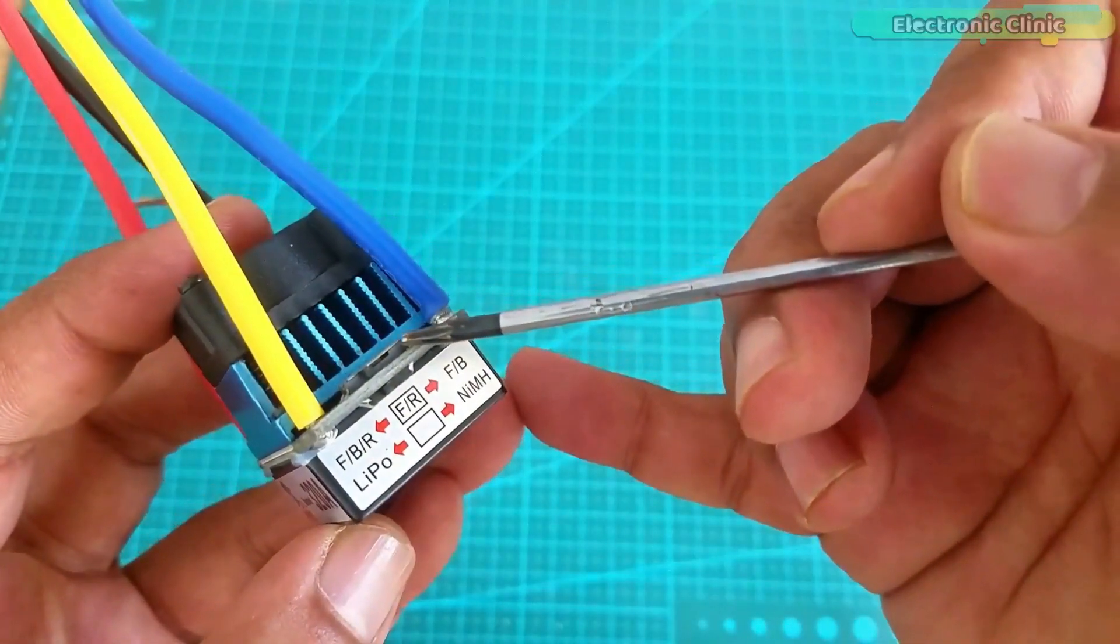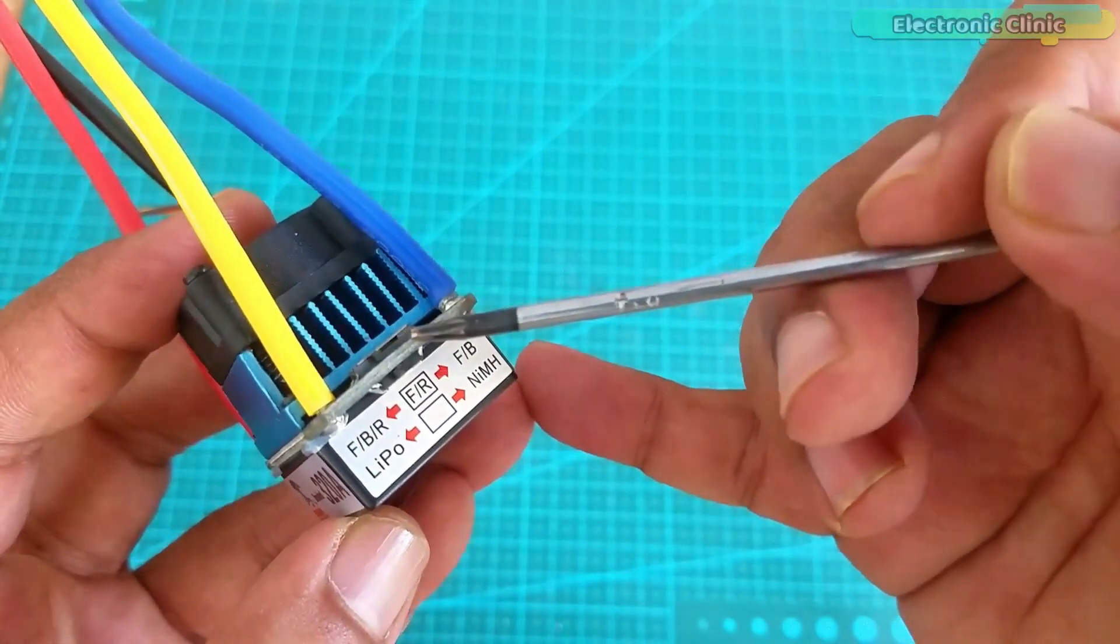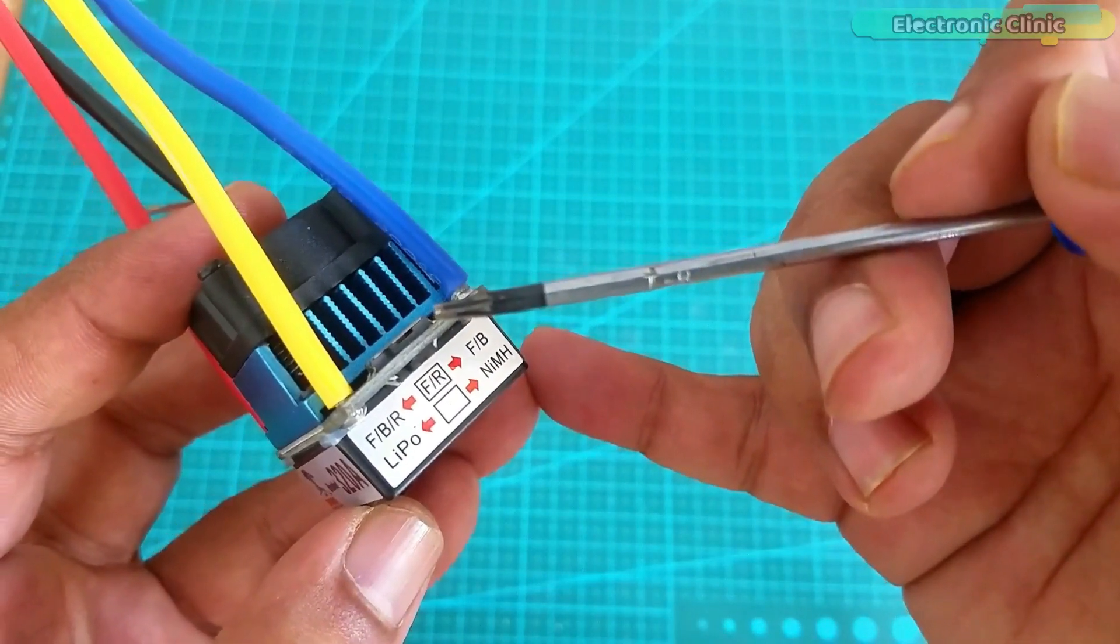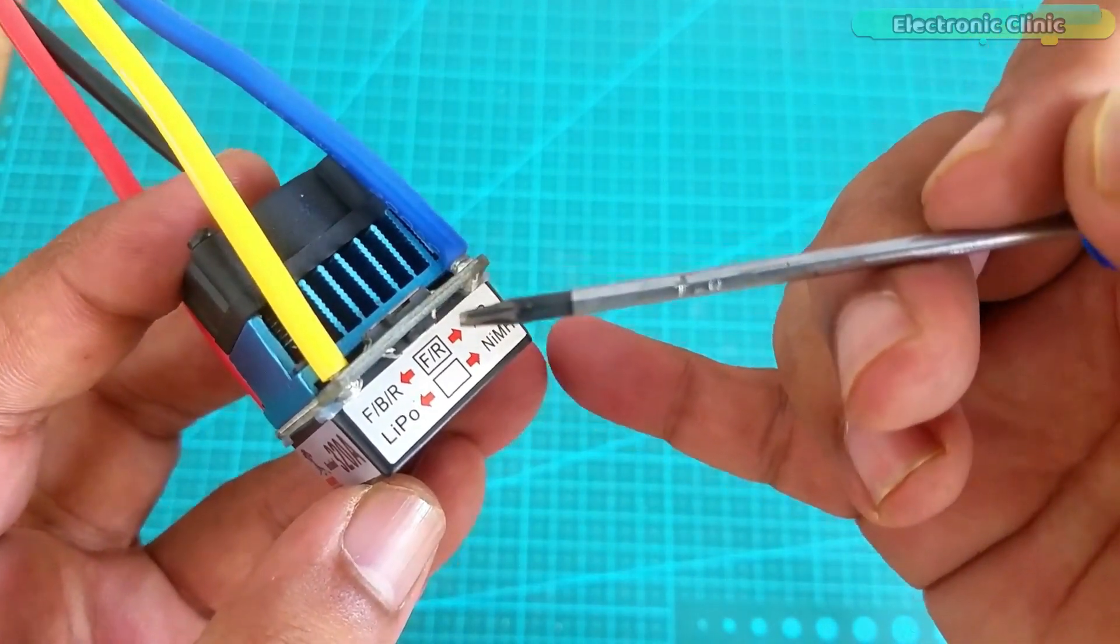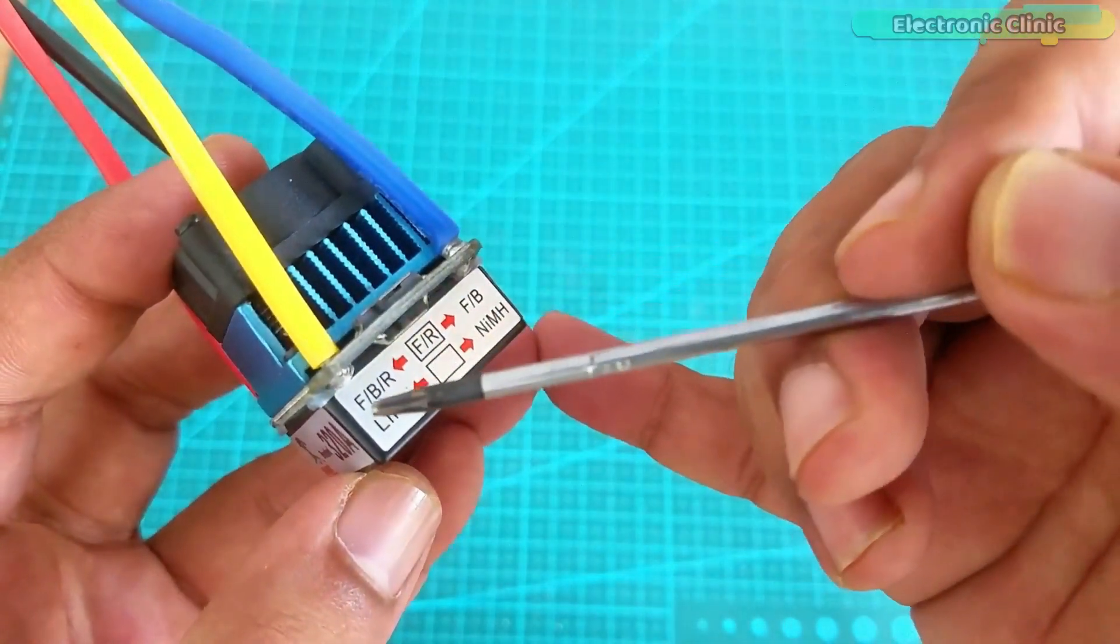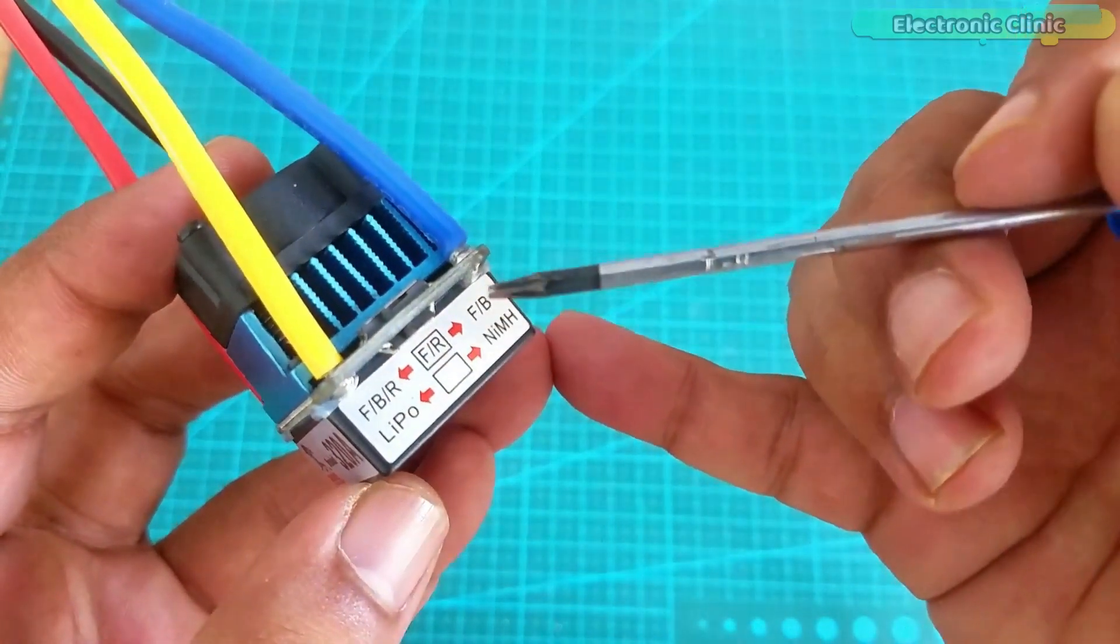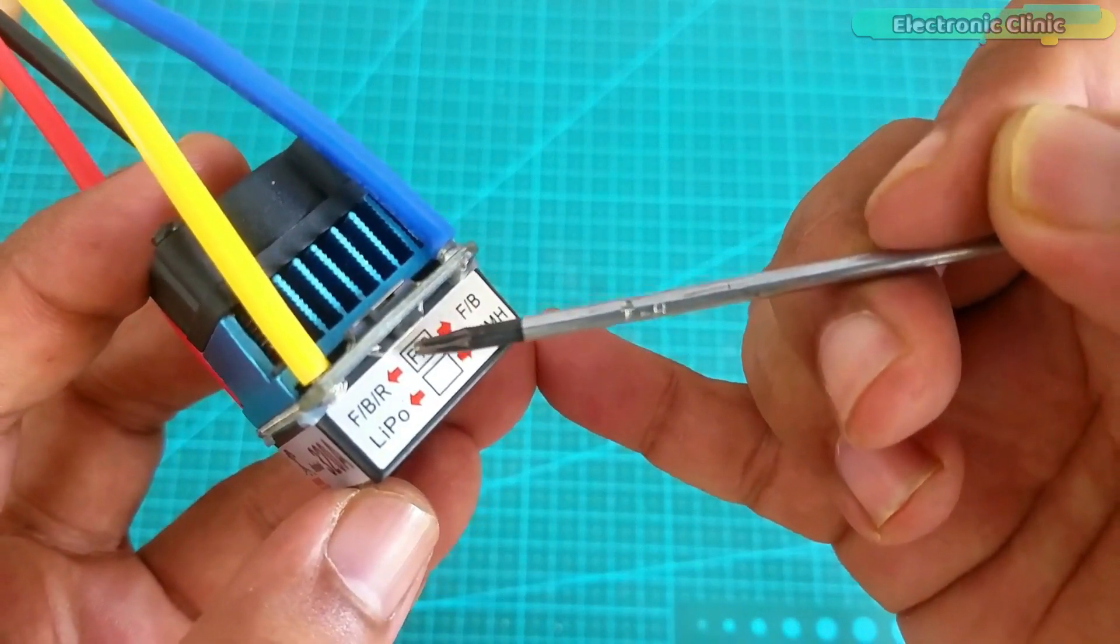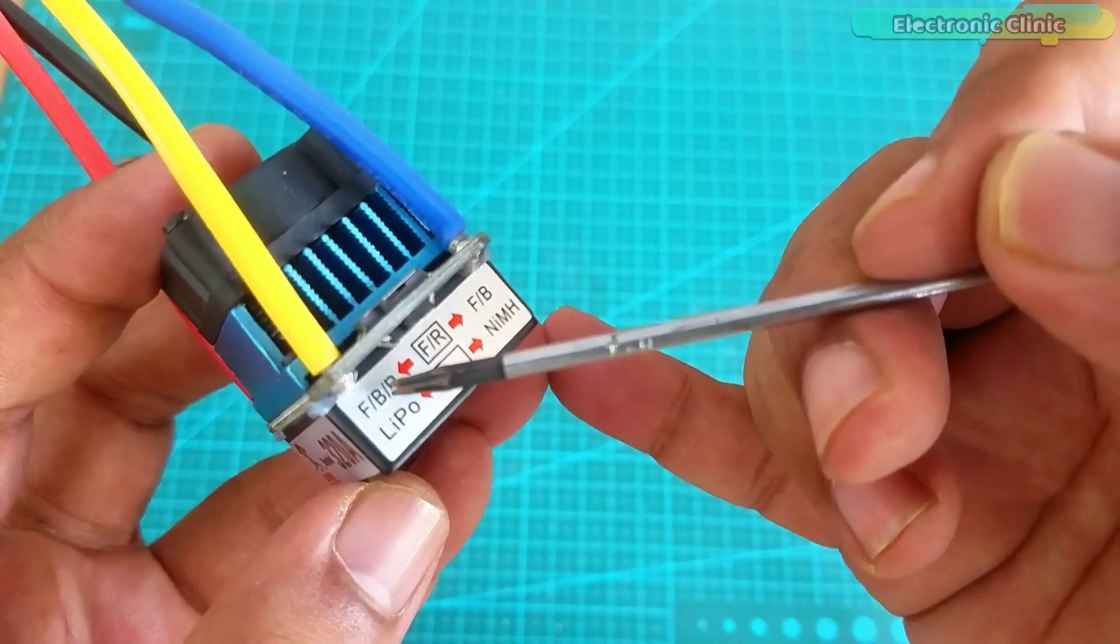On this side you can see we have these two switches on the top and bottom side. These switches are used to program the motor driver. The button on the top side is used to select the operation mode. It's a three position switch and you can select any of these three modes: FBR which is bidirectional mode, FB which is the unidirectional mode and FR which is the climbing mode.